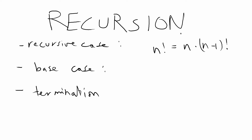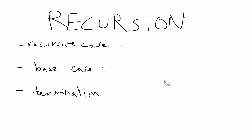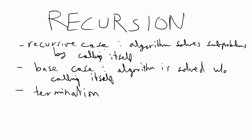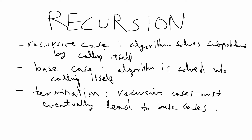To write a recursive method you need three requirements to make sure your program doesn't crash or go into an infinite loop: a recursive case, at least one base case, and termination. The recursive case is where the algorithm solves subproblems by calling itself. The base case is where the algorithm is solved without calling itself. Termination is the condition that recursive cases must eventually lead to base cases.